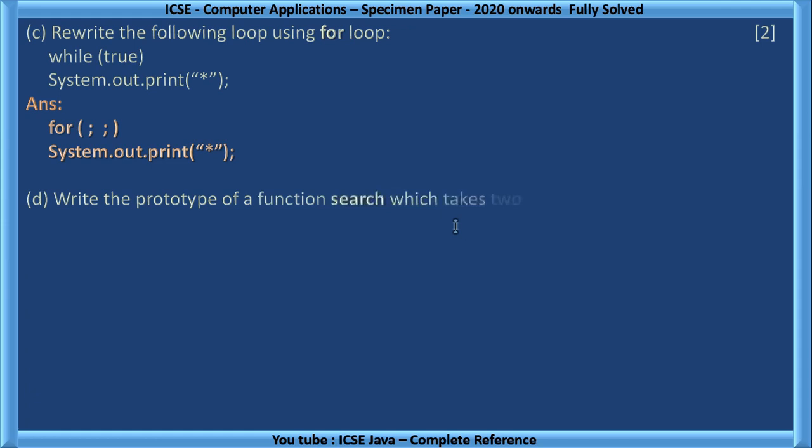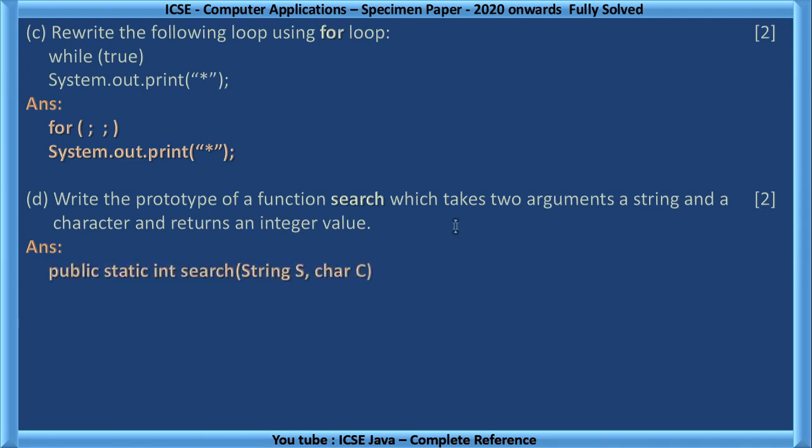Write the prototype of a function search. That means name of the function is search, which takes two arguments, one is a string and other is a character and returns an integer value. Here we can write public static or optionally we can leave it. I have mentioned it here. It returns integer type. So we mention int instead of void. Public static int search is the name of the method and the arguments are string and character. String s comma char c I have written.